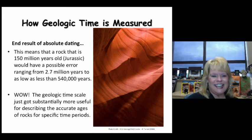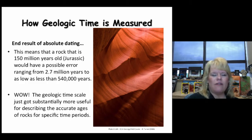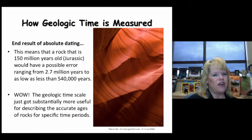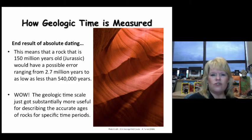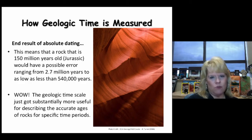The end result is this: a rock that's 150 million years old — like the Navajo Sandstone from the Jurassic — would have a possible margin of error ranging from 2.7 million years to less than 540,000 years. While that sounds like a huge amount of time to us as humans, you have to consider the span of Earth's history being almost 4.6 billion years old. That's pretty darn close.